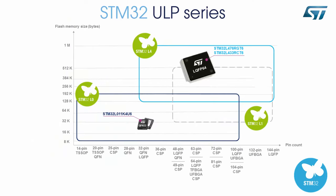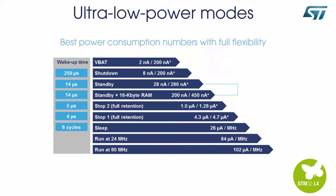A good compromise between low consumption and performance is the STM32L476RG and L433RC — both good candidates to benchmark. Now, ULP mode's key points.